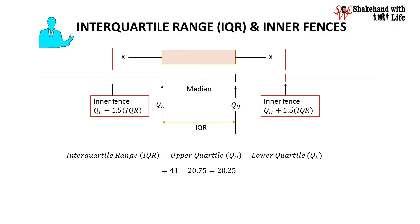Now we will find the interquartile range and inner fences. Interquartile range is the difference of upper quartile and lower quartile. Upper quartile is 41 and lower quartile is 20.75. So 41 minus 20.75 we have 20.25.